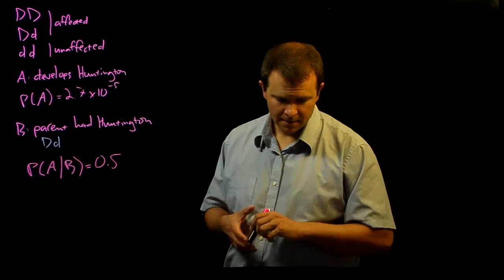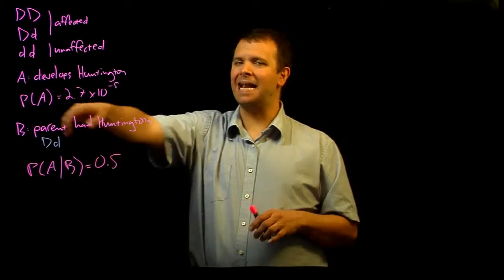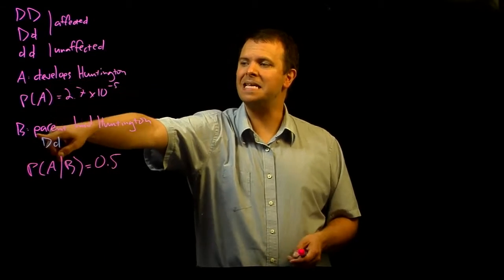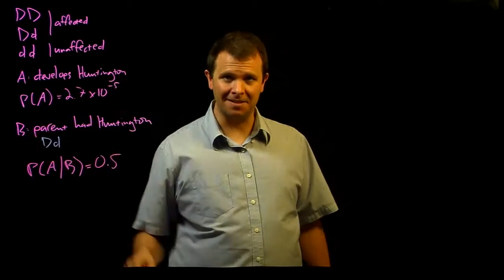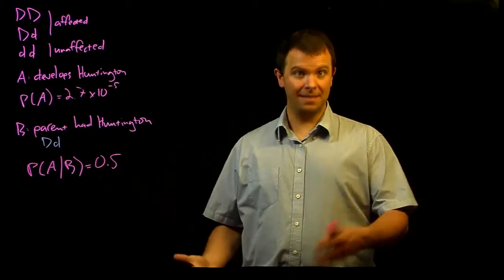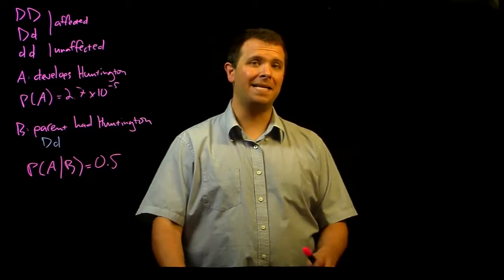It's 50%. The probability that a randomly chosen person develops Huntington given that their parent had Huntington isn't 2.7 times 10 to the minus 5. It's 0.5, and it is quite a bit different.